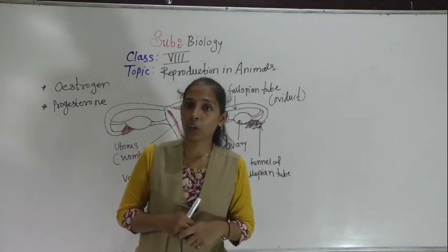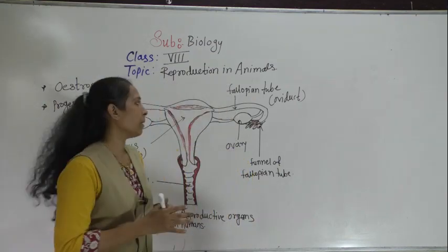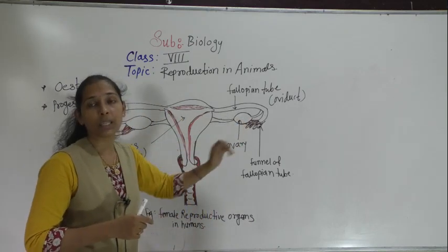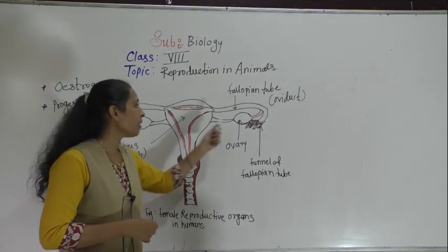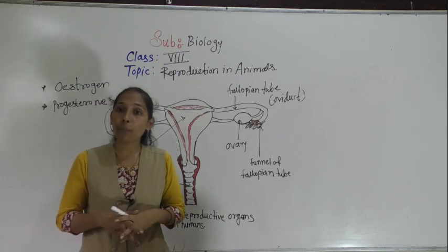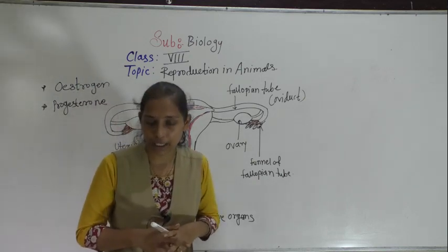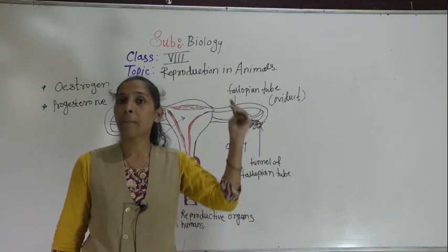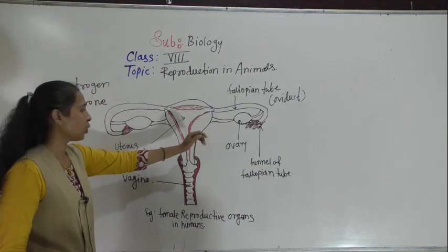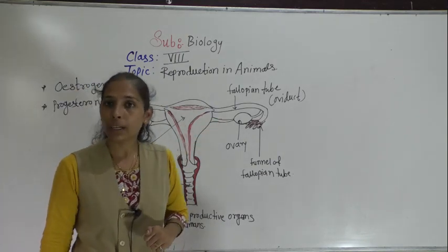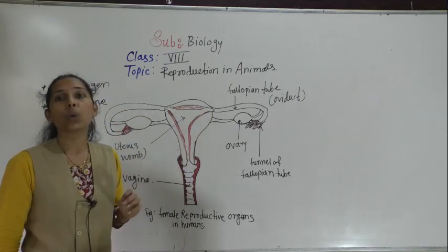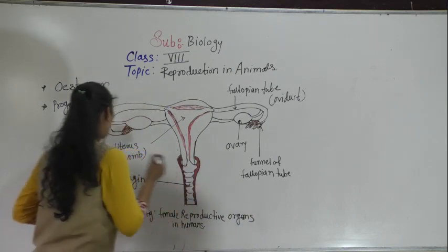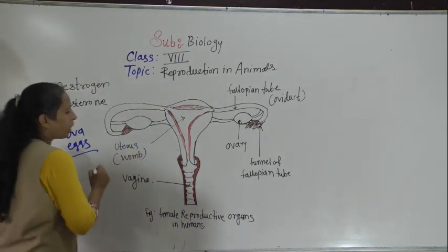Firstly, we will start with the first organ — the ovaries. In the female reproductive system, there is a pair of ovaries situated in the abdominal cavity, just below the kidneys. The important point is that ovaries are situated inside the abdominal cavity and below the kidneys. The function of the ovaries is to produce the female sex gamete, which is called ova or eggs.